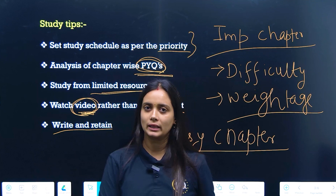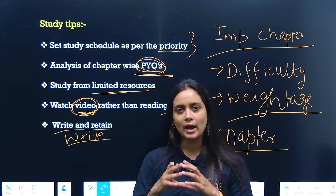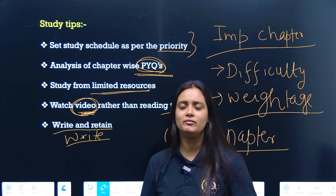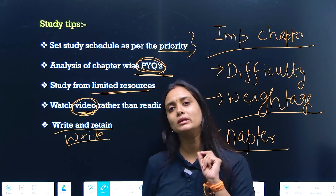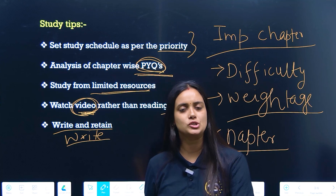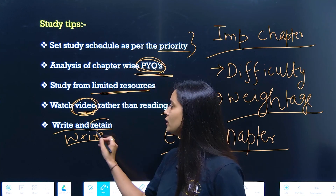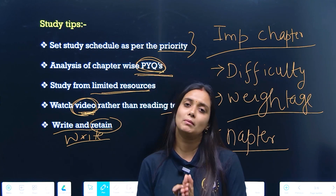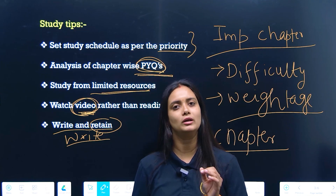When you read a topic, also write it down. When we read something and then write it, we can recall it much more easily later. When you recall it and write it, the topic becomes set in your brain. So you should read and write together for better retention.